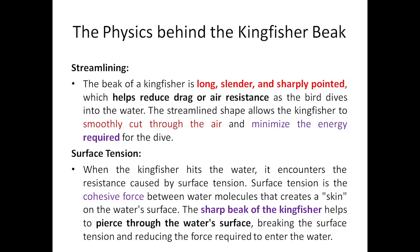The streamlined beak helps to reduce drag or air resistance as the bird dives into the water. The streamlined shape allows the kingfisher to smoothly cut through the water and minimize the energy required for the dive. This same property of drag reduction is copied for the bullet train as well.